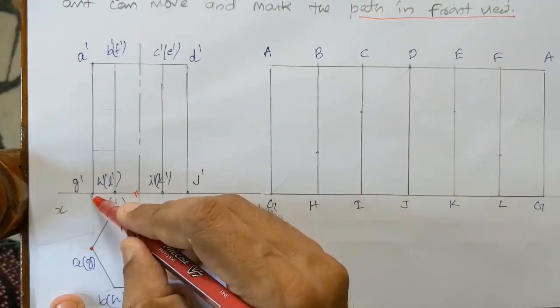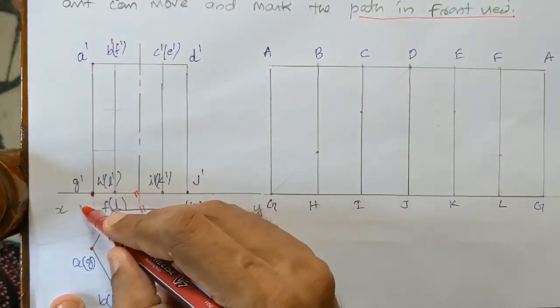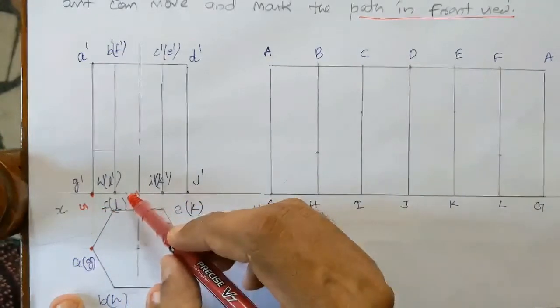That is for example corner A. I have G, G in the corner A.